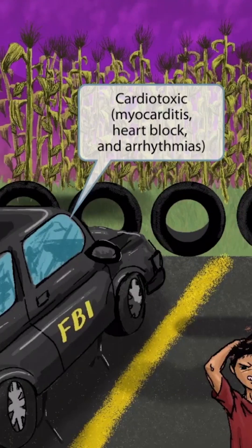All of these agents didn't walk here — they came in their car, which you can see on the left side of the image. The car should help you remember that the organism is also cardiotoxic. This may be manifested as myocarditis, heart block, and arrhythmias. So, car for cardiotoxic.